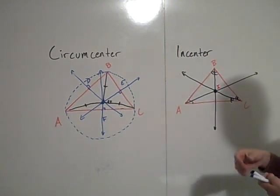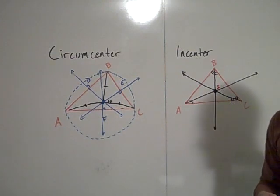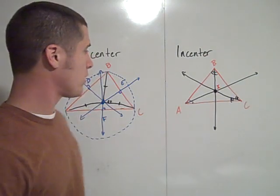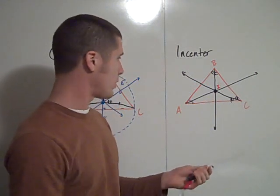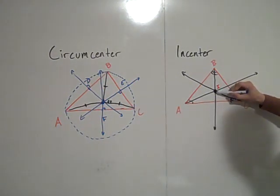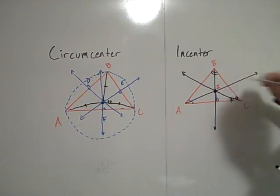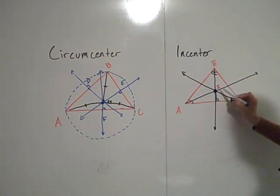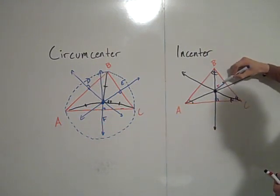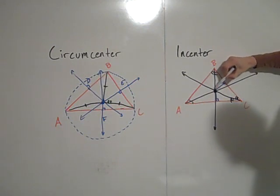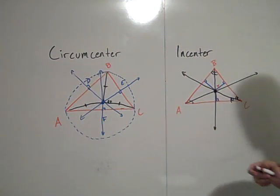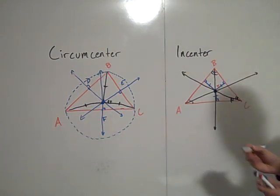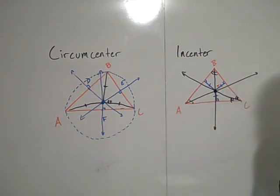I'll call that point I for the incenter. The incenter theorem says that the incenter is equidistant from the sides of the triangle. That means if you drop a perpendicular from I to each of the sides, those three segments will be congruent. So if we drop a perpendicular from I to AC, that's one segment; from I to BC, that's another. Those three segments are congruent — that's the incenter theorem.